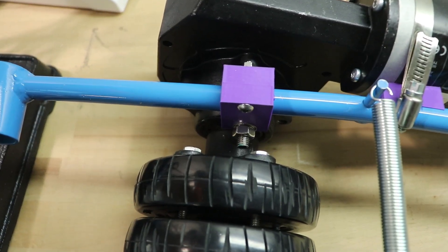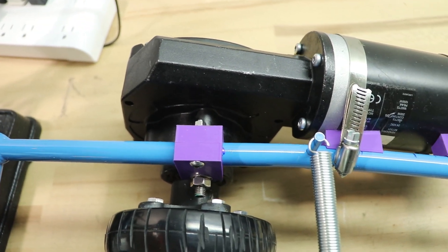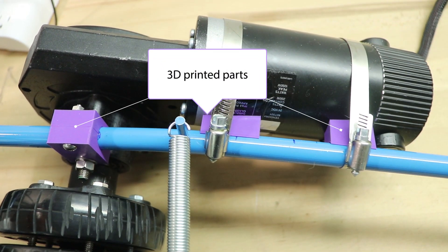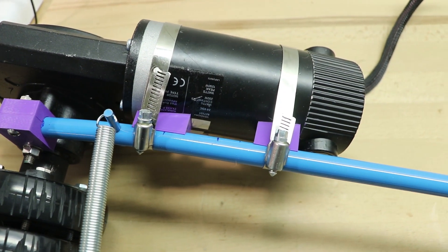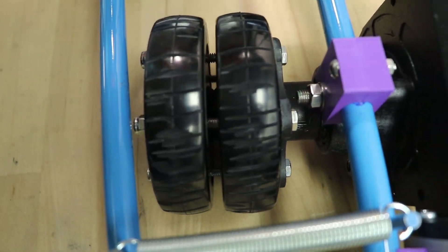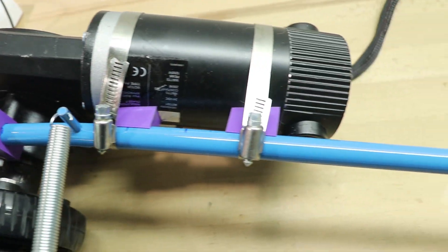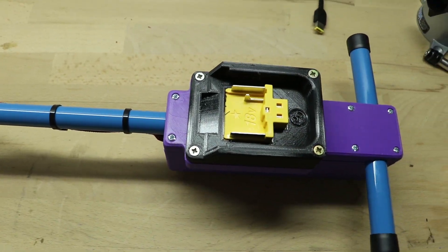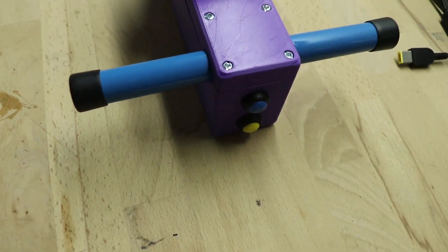All the purple parts are 3D printed. Here's a quick overview how the whole assembly looks like. This is the control box with the battery mount and also the two buttons for forward and backwards.